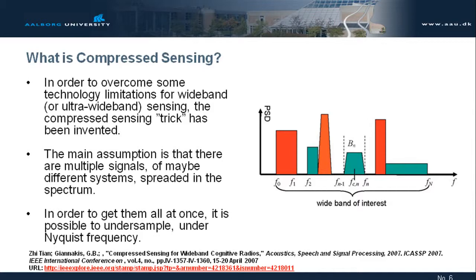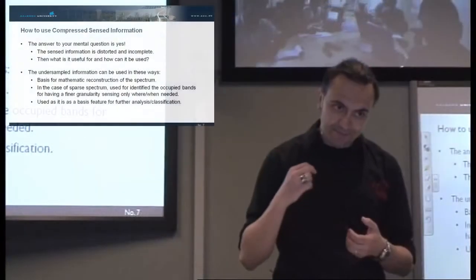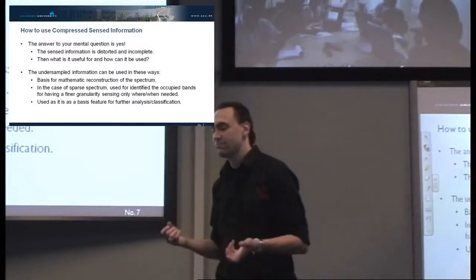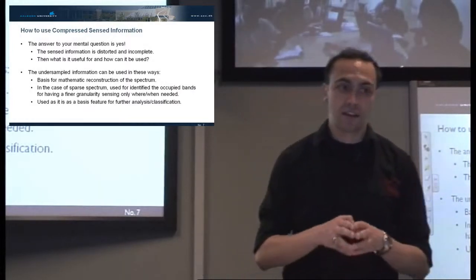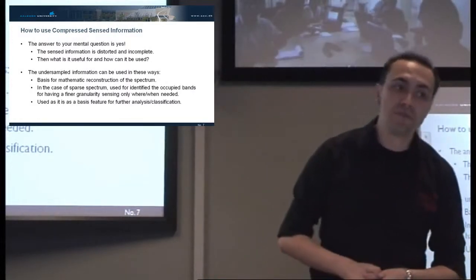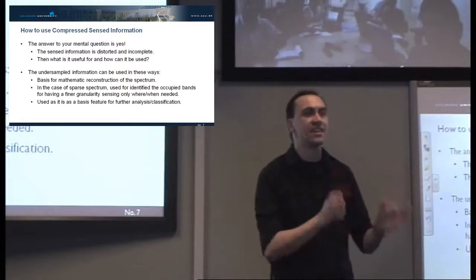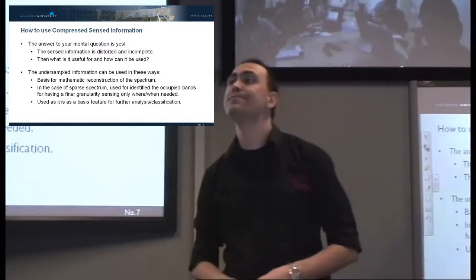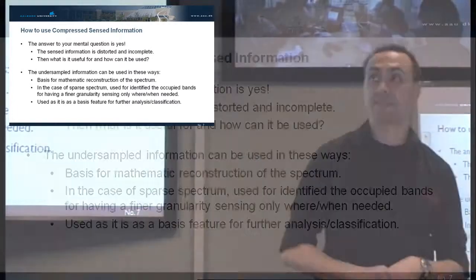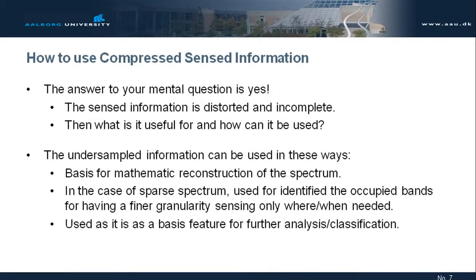Normally you would say the resulting signal is bad quality — and yes, that's true — but there is more to it. There is a notable paper by Giannakis on compressed sensing that provides a very nice overview of how it can be used even with distorted, very bad quality, or incomplete information. From a mathematical point of view, we can perfectly reconstruct the under-sampled signal as if nothing had happened — mathematically — especially in the case of a sparse spectrum.